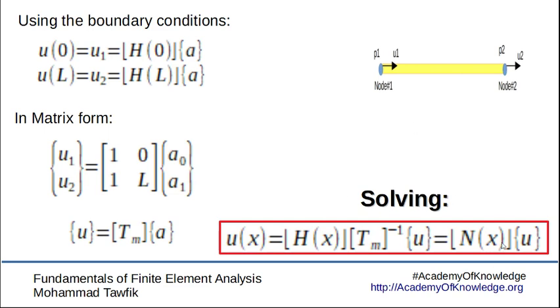Then solving this equation will give us an inverse of the T matrix. If we substitute it back into our original function, we will get that u of x can be presented as the row vector H of x multiplied by the inverse of the transformation matrix.